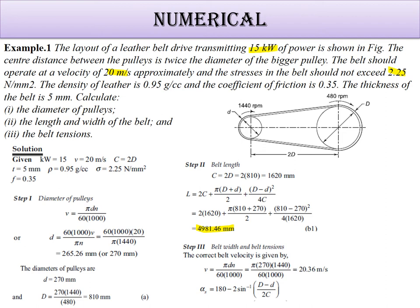For belt width and belt tension, we need the correct velocity because we changed the diameter from 265.26 to 270 mm, so the velocity will change. We find the correct velocity as 20.36 meters per second. Based on that, we find the wrap angle, which is 2.81 radians.